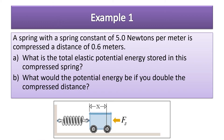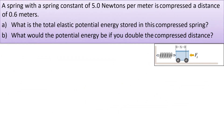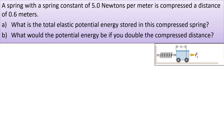Example one: a spring with a spring constant of 5 newtons per meter is compressed a distance of 0.6 meters. What is the total elastic potential energy stored in the compressed spring? And what would the potential energy be if you double the compressed distance? Pause the video and try this one on your own.